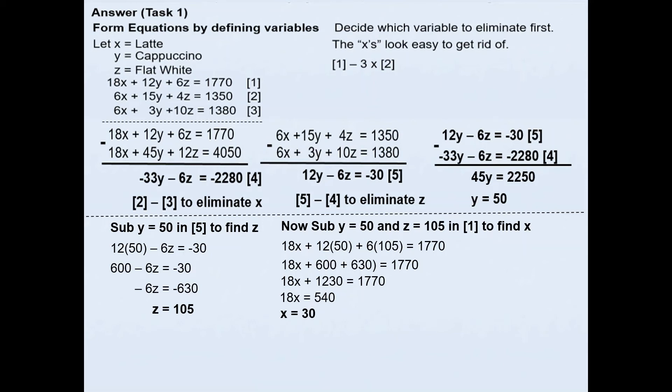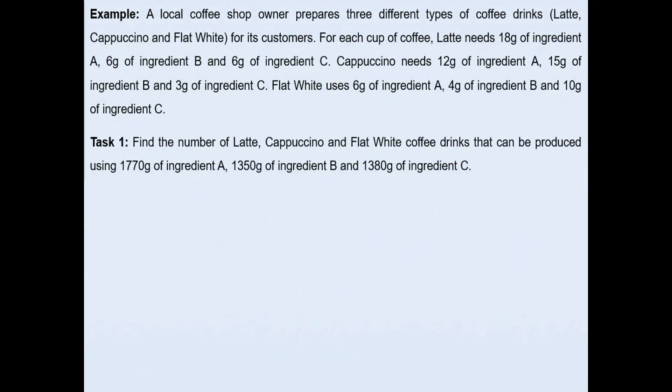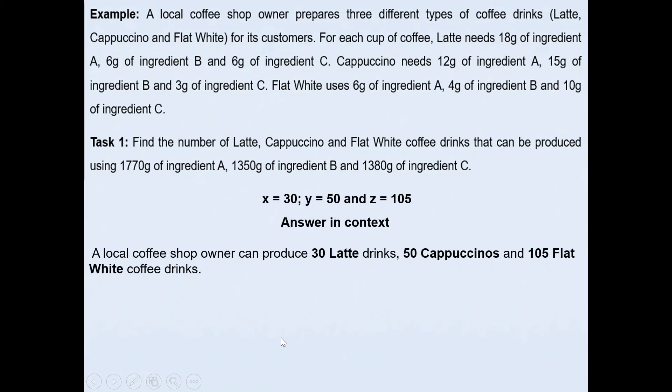Now we'll put all those three informations together. So x is 30, y is 50, and z is 105. Once you've got these three values, you must interpret this in context. You must answer the question in context. The question said find the number of latte, cappuccino, and flat white drinks that can be produced using these number of ingredients. This means a local coffee shop owner can produce 30 latte drinks, 50 cappuccinos, and 105 flat white coffee drinks using these ingredients.